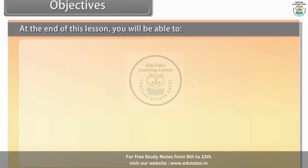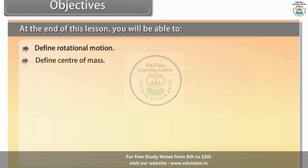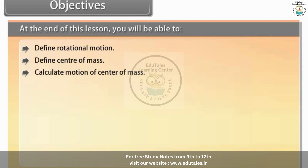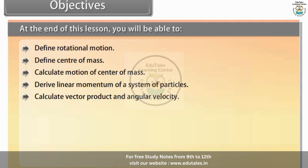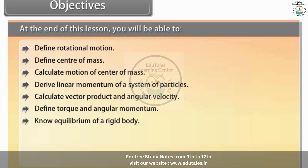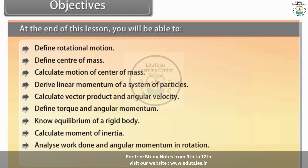At the end of this lesson, you will be able to: define rotational motion, define center of mass, calculate motion of center of mass, derive linear momentum of a system of particles, calculate vector product and angular velocity, define torque and angular momentum, state equilibrium of a rigid body, calculate moment of inertia, analyze work done and angular momentum in rotation, and understand rolling motion.